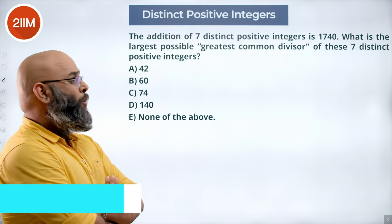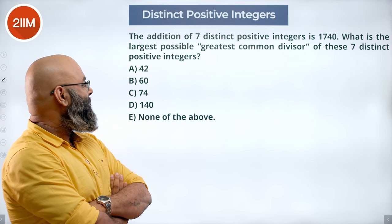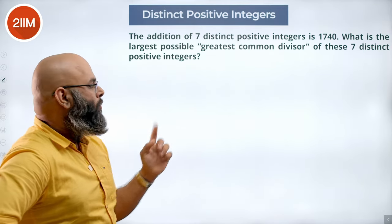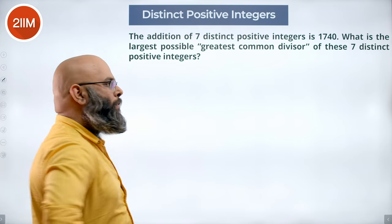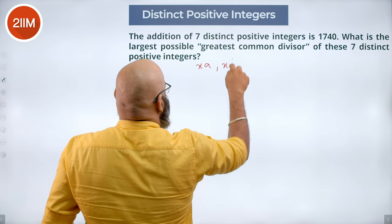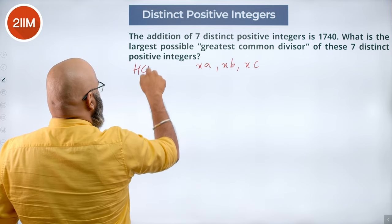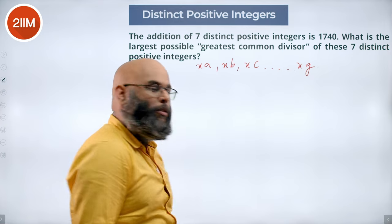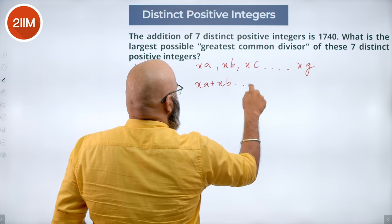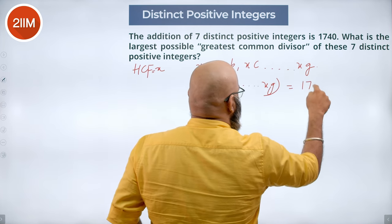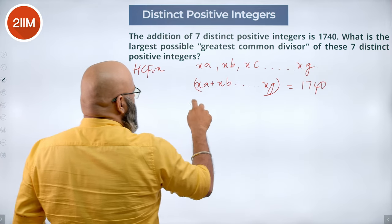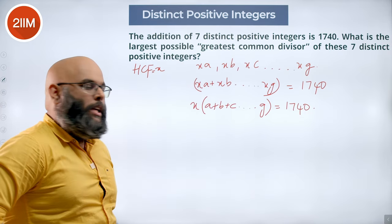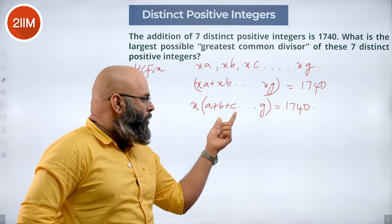The addition of 7 distinct positive integers is 1740. What is the largest possible greatest common divisor of these 7 distinct positive integers? Since all 7 numbers share an HCF, let them be X·A, X·B, X·C, ... X·G where HCF is X. Their sum X(A+B+C+...+G) = 1740. To maximize X, we minimize the sum A+B+...+G. The factorization of 1740 is 2²×3×5×29.